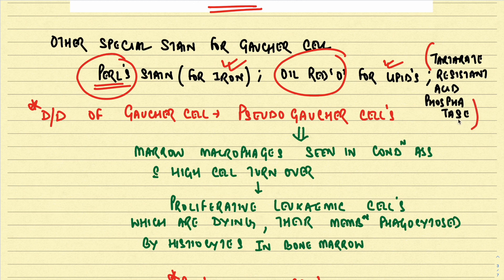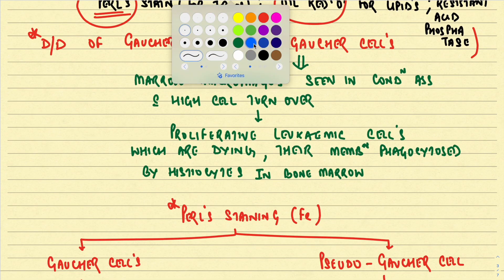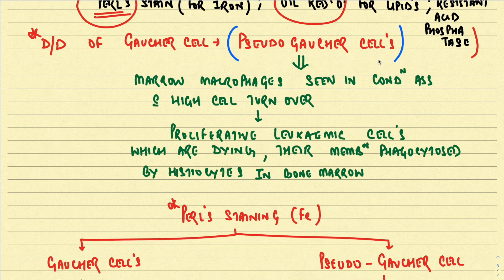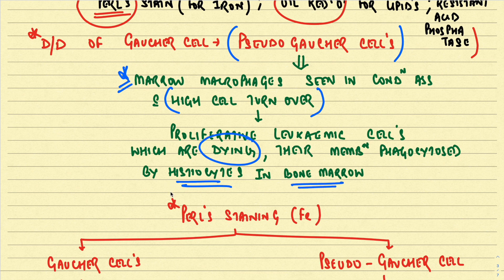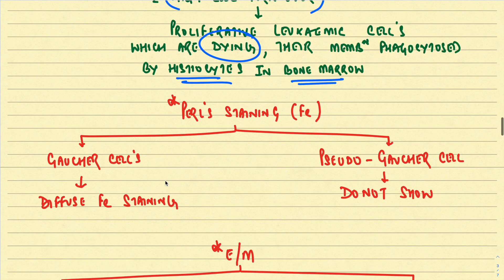The differential diagnosis includes pseudo-Gaucher cells — bone marrow macrophages seen in conditions with highly proliferating tumors or high cell turnover, such as proliferating leukemia. In leukemia, histiocytes phagocytose membranes of dying leukemic cells and resemble Gaucher cells. To differentiate: true Gaucher cells show diffuse iron staining on Pearl stain, whereas pseudo-Gaucher cells do not.